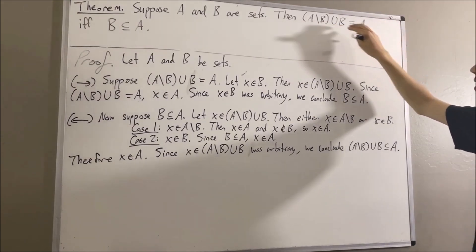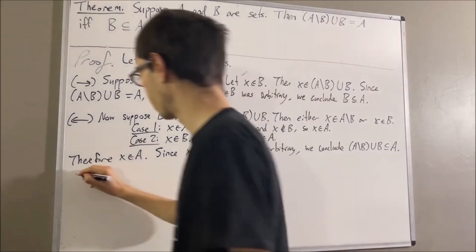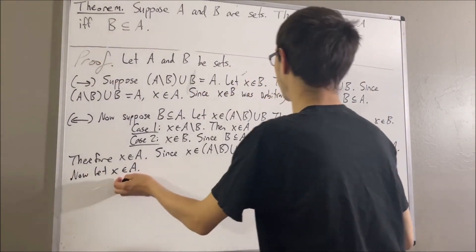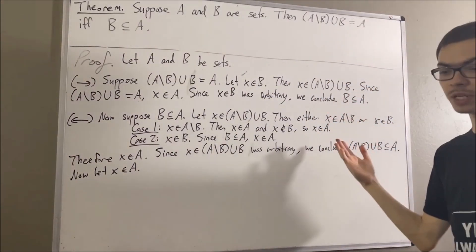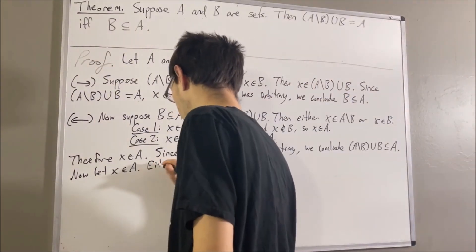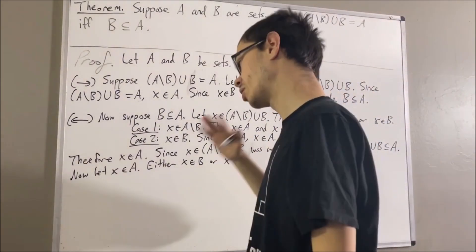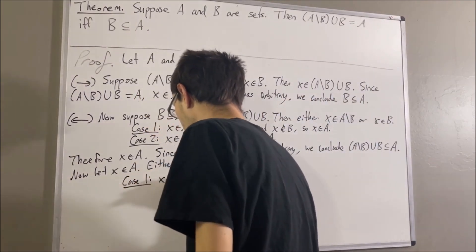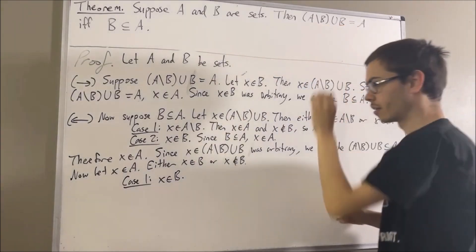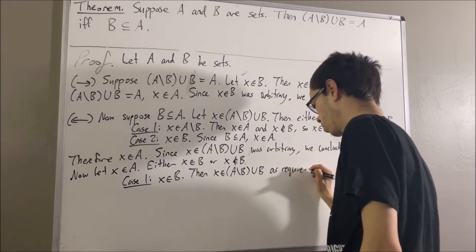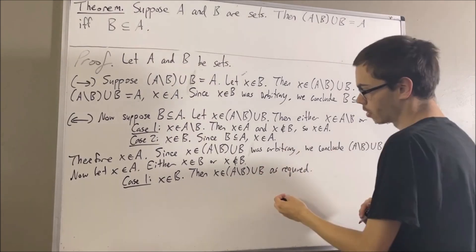Now we're going to show everything in A is also in the union of A set minus B and B. Give me an arbitrary element of A — I'll call it X. We want to show that X is an element of this set. To do so, we'll break this up into two cases: either X is an element of B, or X is not an element of B. In either case, we're going to prove that X is an element of this set. Let's start with case 1, where X is an element of B. In this case, we have that X is an element of B or A set minus B. So X is an element of A set minus B union B, as we wanted. That completes case 1.